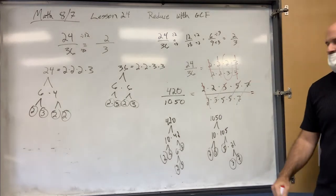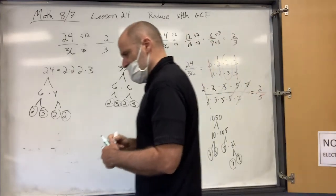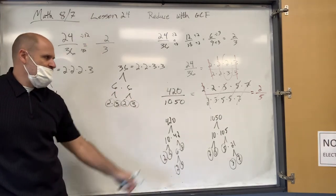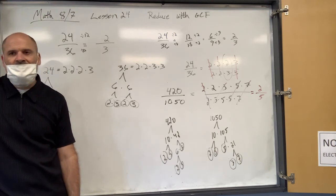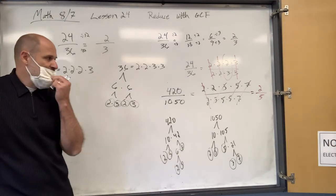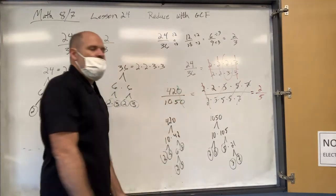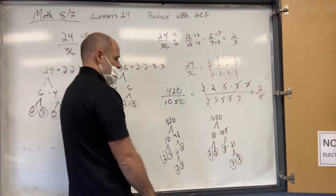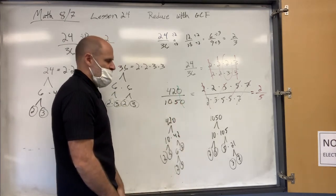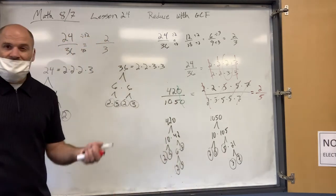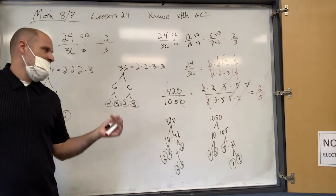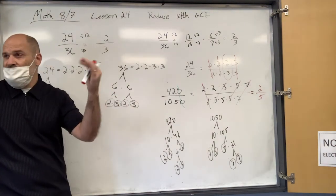So what am I left with after canceling? Two fifths — that's it. That was kind of satisfying! Simpler approach: divide both by 10 right away to remove the zeros, then seven goes into 42 six times and into 105 fifteen times. Six and 15 both have three in them, so divide by three — six becomes two, 15 becomes five. Two fifths, done.